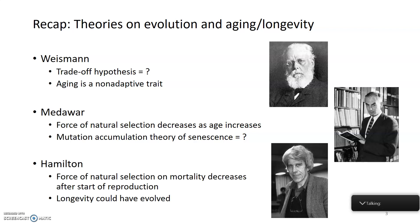What Hamilton did was take Peter Medawar's idea about the force of natural selection decreasing as age increases and do the math to prove it. He developed a specific metric to measure the force of natural selection on mortality and found that it decreases after the start of reproduction. Based on his mathematical theory, he argued that longevity could have evolved, and longevity genes were most likely those that allowed an organism to reach reproduction.